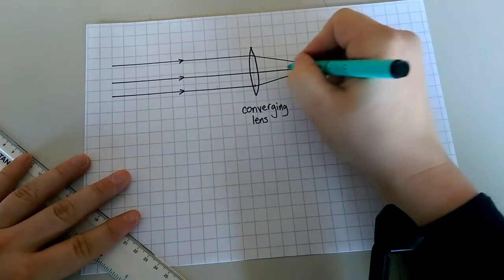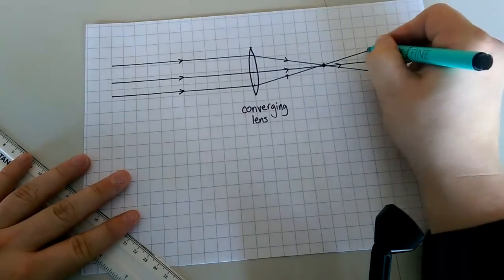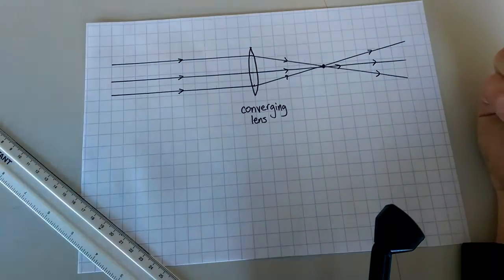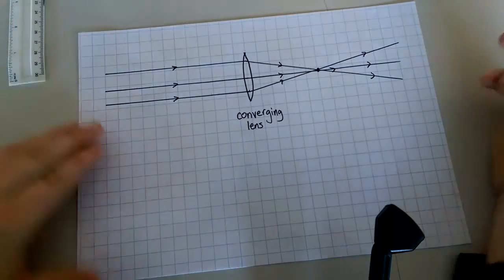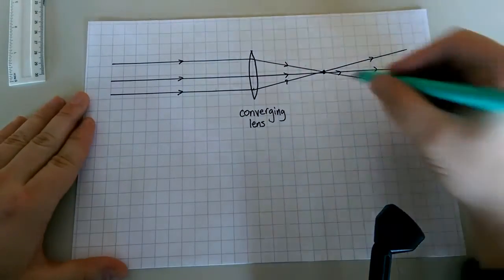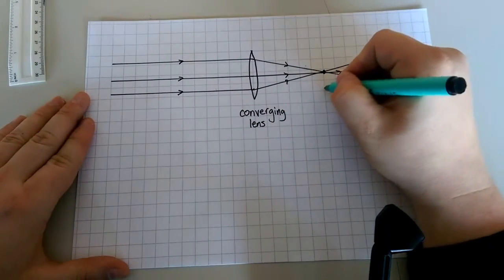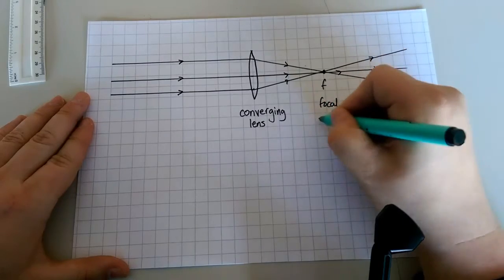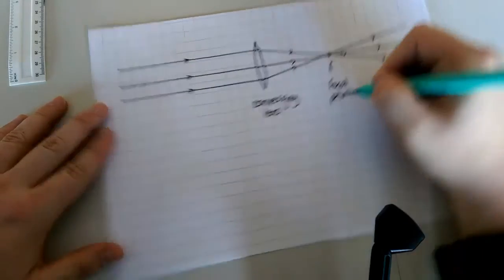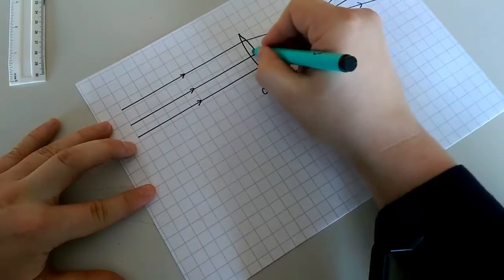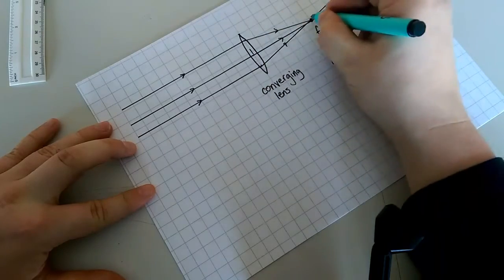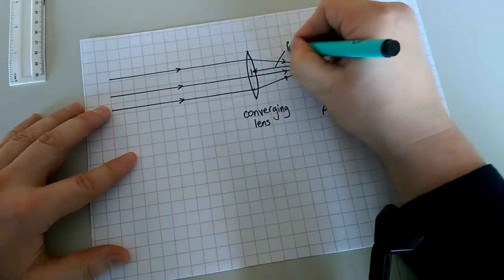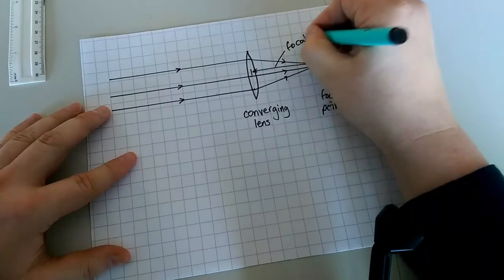It's always good practice to draw rays of light with a ruler, and preferably with a pencil if you have to do it in an exam. This point is our F, or our focal point, and the distance from the lens to that point is our focal length.